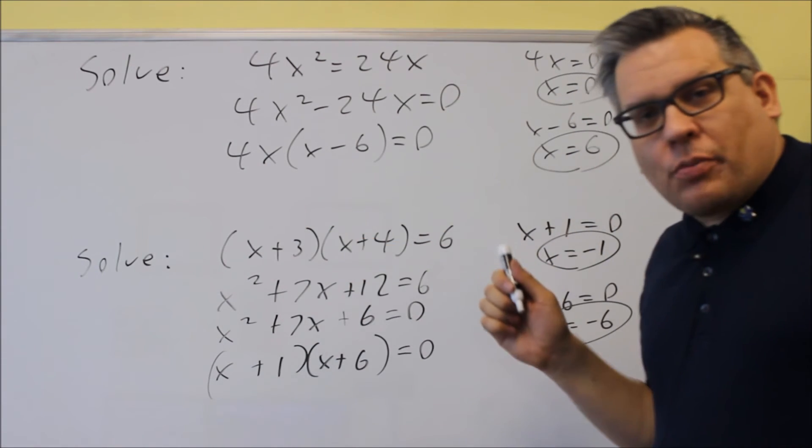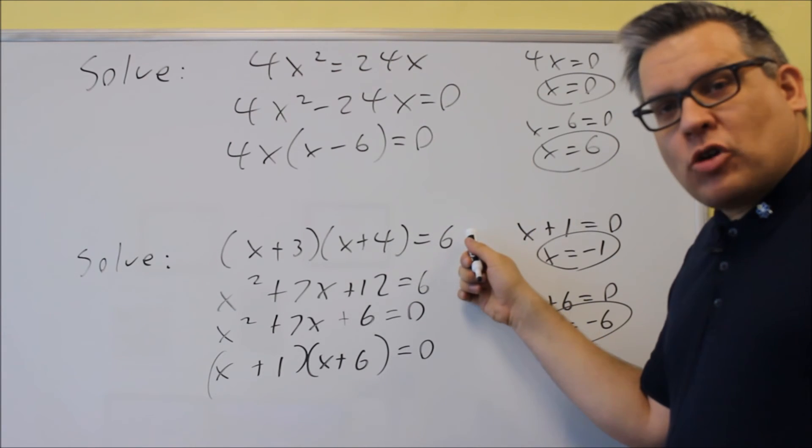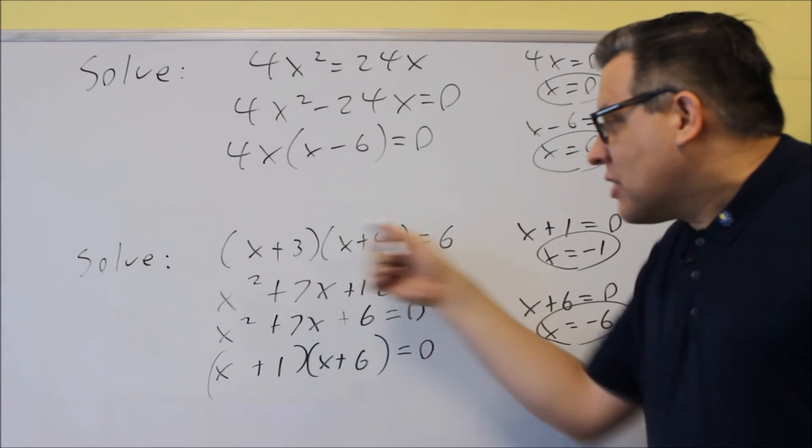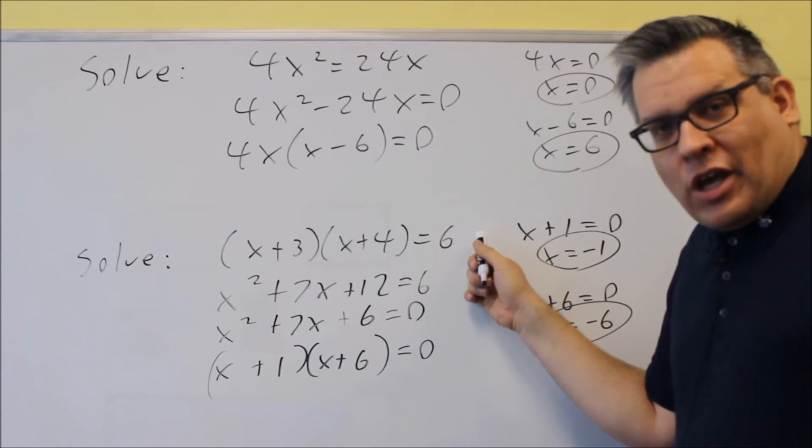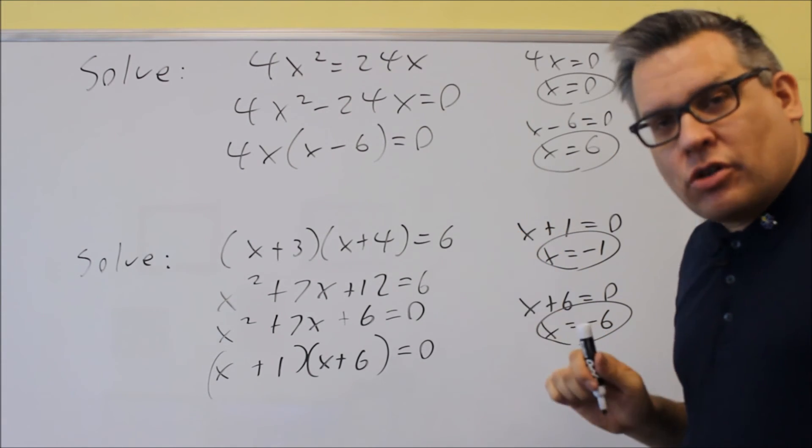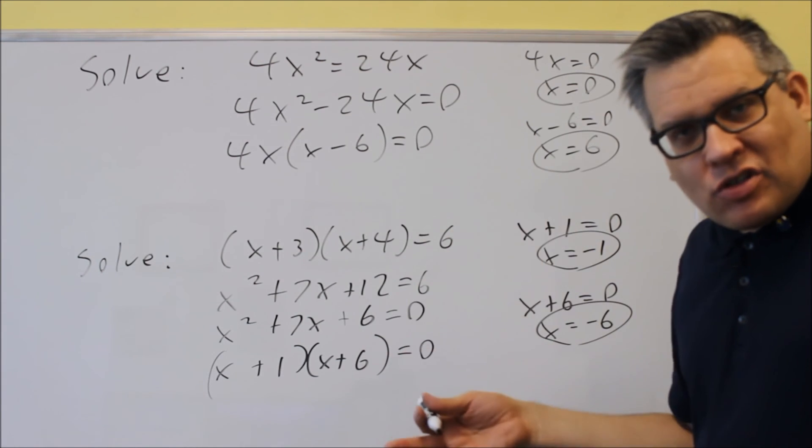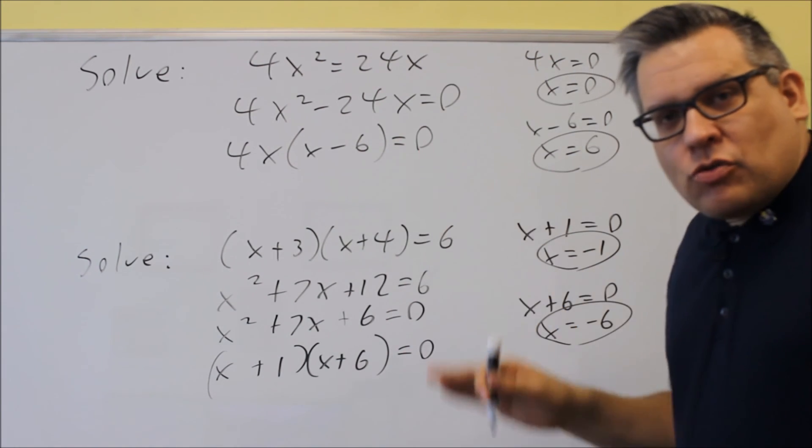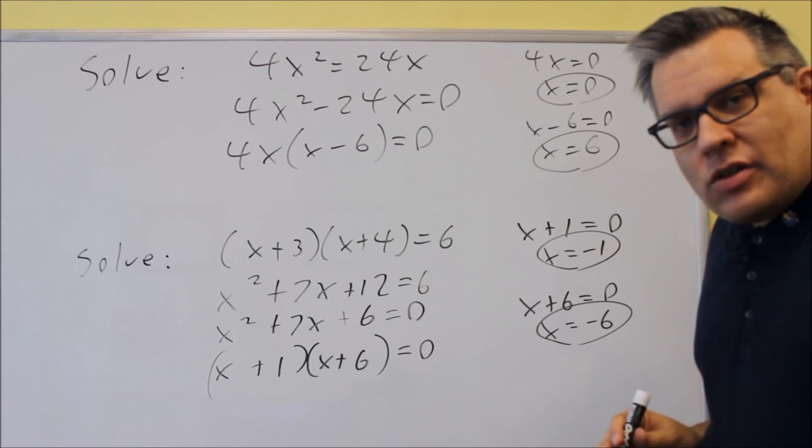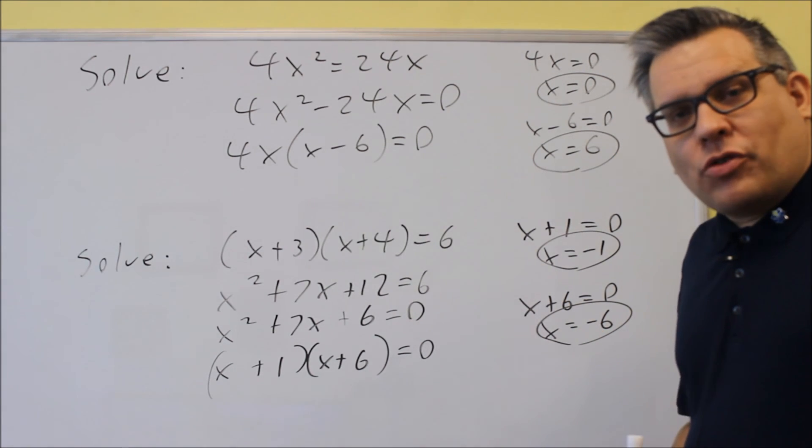So again, for this particular problem, if you have any other number over here besides zero, you can't set both factors equal to that. You can only do that when you have a zero. So if you don't have a zero on that side, these are two examples where if you don't have a zero, then you've got to manipulate it to where you do get a zero on the right-hand side, so that way you can factor and set them both equal to zero.